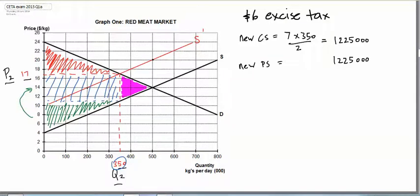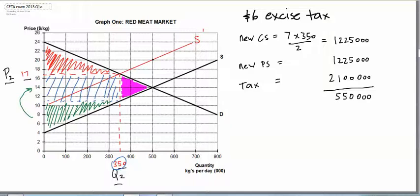Some of the surplus — some of the previous surplus — has obviously gone to the government in the form of tax. The tax was $2,100,000. So that total was $10,554. That's the total surplus after the tax.